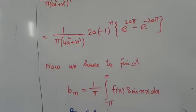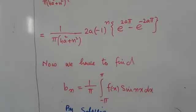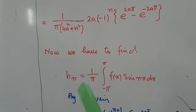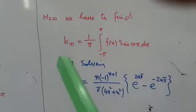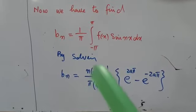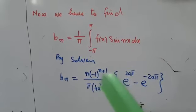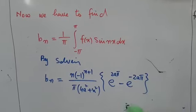Last Fourier coefficient bₙ equals 1 over π integral minus π to π f(x) sine nx dx. By solving, bₙ equals n times (-1)ⁿ⁺¹ over π times 1 over 4a² plus n² into e to the 2aπ minus e to the minus 2aπ.